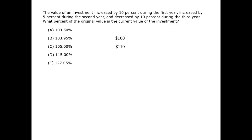Then it increases by 5%. Since 5% is half of 10%, we can move the decimal point to see that 10% of 110 is 11. And it increases by half of that, so it increases to $115.50.